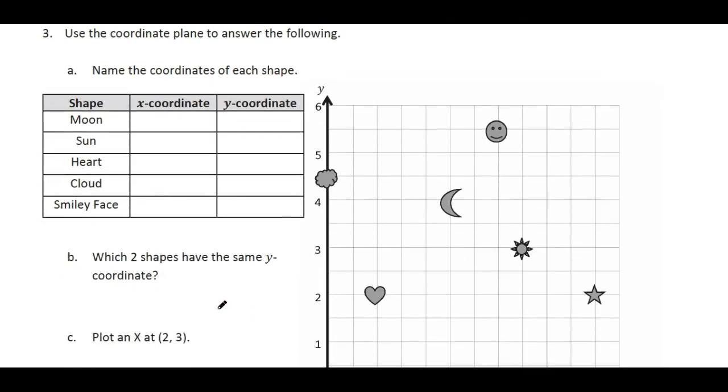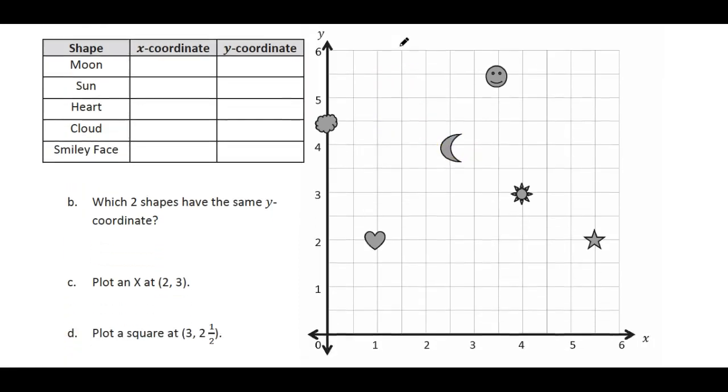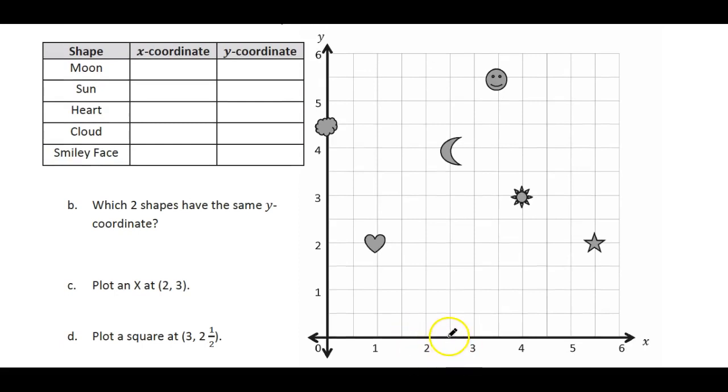Use the coordinate plane to answer the following. So name the coordinate of each shape. So we're going to find moon first. Let's scroll this up so we can actually see the numbers at the bottom here. So this one is going to be on the moon. It's going to be two and a half on the x, two and a half, and then moon is going to be at the four. So it meets right where those come together. Now go to sun. Sun is at four three, four three. And now we're going to go to a heart. We're going to go over one for the heart and then we're going to go up to the two. So the coordinates are one two.